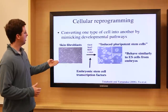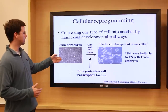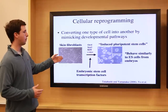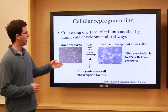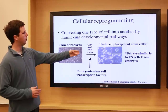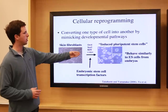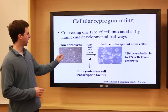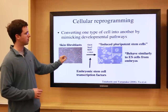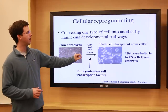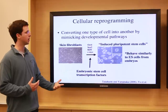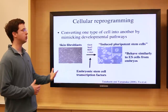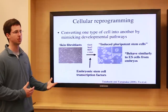Dr. Yamanaka showed that you can take skin fibroblasts from a mouse, and also from a human, and introduce these four transcription factors to those cells, and then actually reprogram the skin fibroblasts to behave like pluripotent stem cells, or like embryonic stem cells. These are called induced pluripotent stem cells.